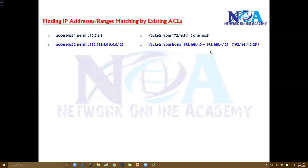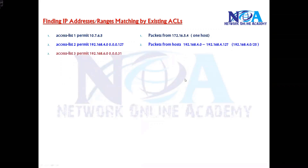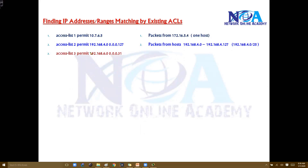I'll show you the calculation as well, though the basic prerequisite is that you already know subnetting concepts and calculations. Now another example: we have an ACL statement with network 192.168.6.0 and a wildcard mask of 0.0.0.31.